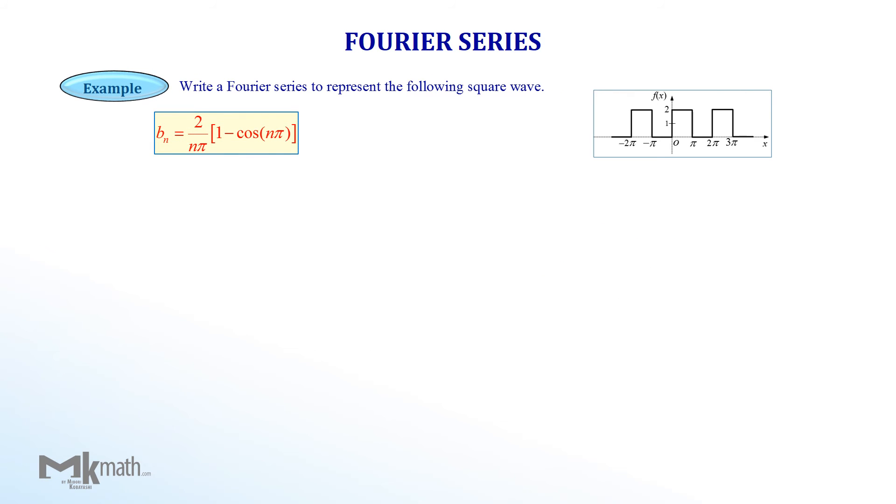We just found the equation to find b values so let's find out. When n equal 1, we just substitute 1 into 3 n positions. Since cosine pi is negative 1, the inside of the bracket becomes 2. So, b sub 1 is 4 over pi.